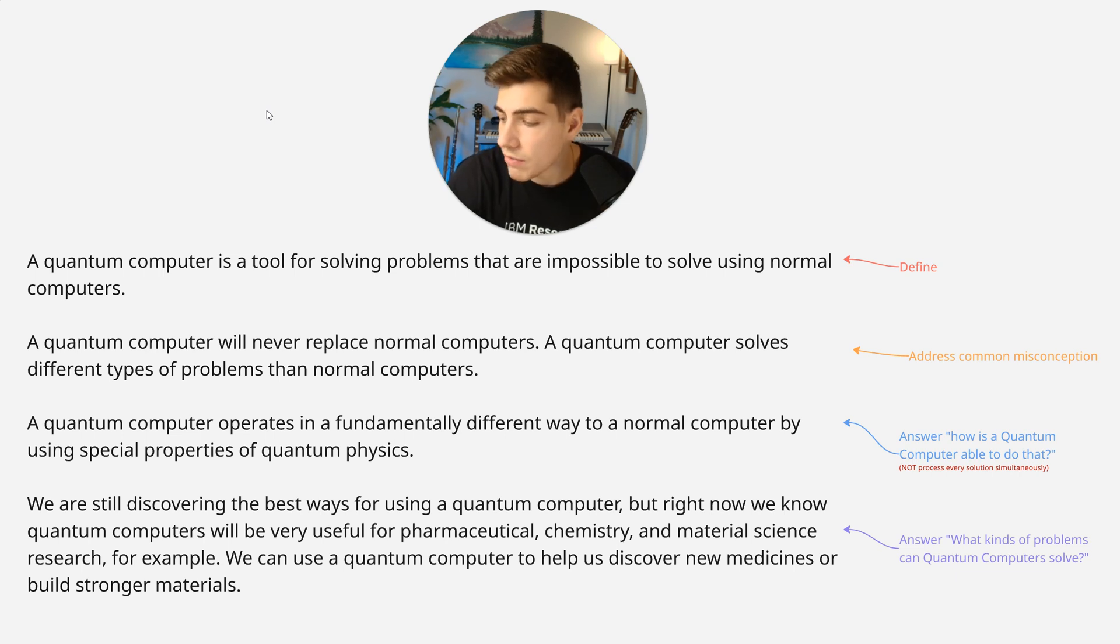An analogy that you can give is a quantum computer is simply a tool, just like a normal computer is. A quantum computer is just like a microscope. It's a tool that a scientist uses. A quantum computer is a tool that a scientist uses to help them solve a problem.